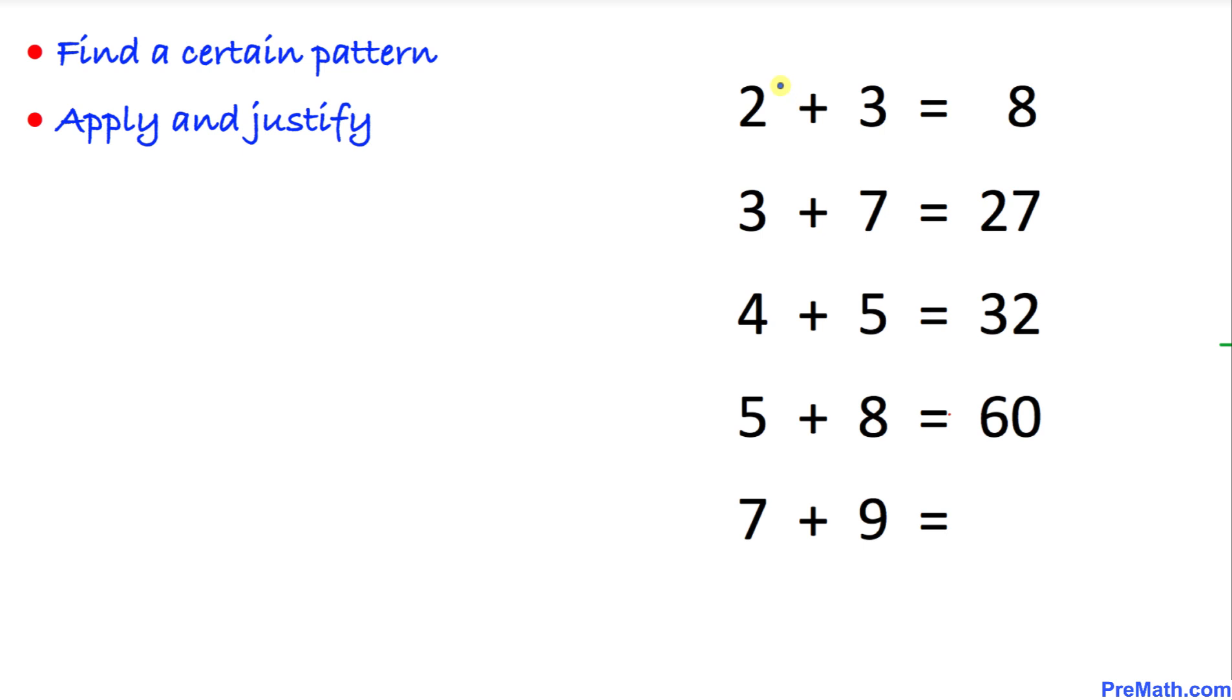So let's look at these first two numbers. If we multiply them, 2 times 3 is going to be 6. And then if we add this number 2 to it, 6 plus 2 is going to give us 8.